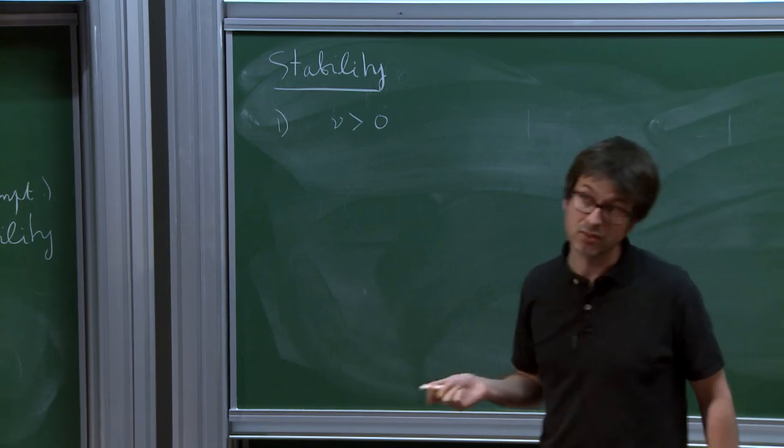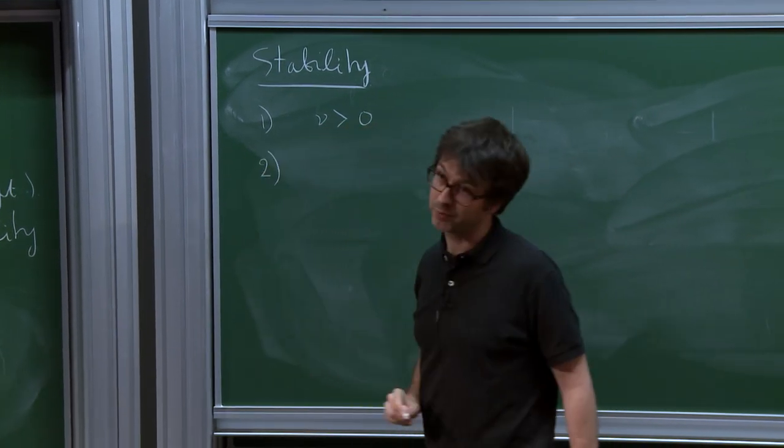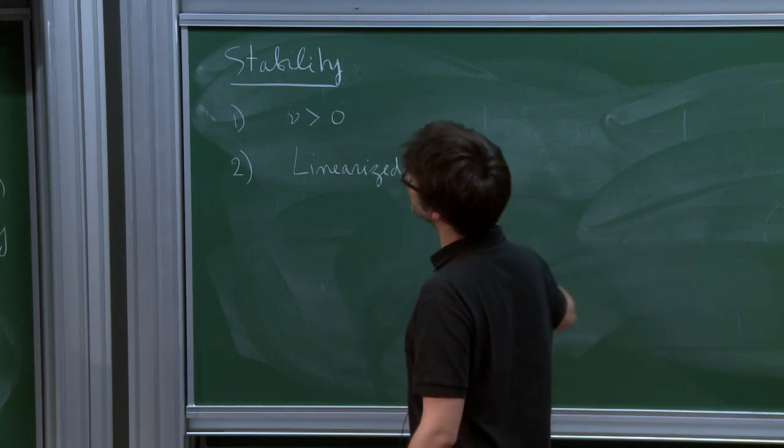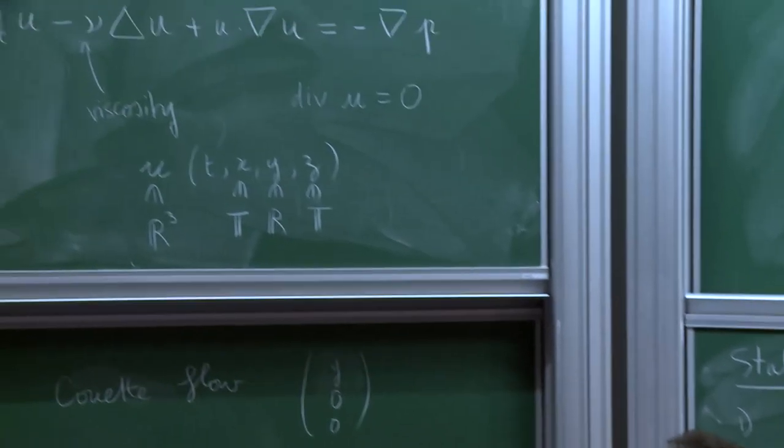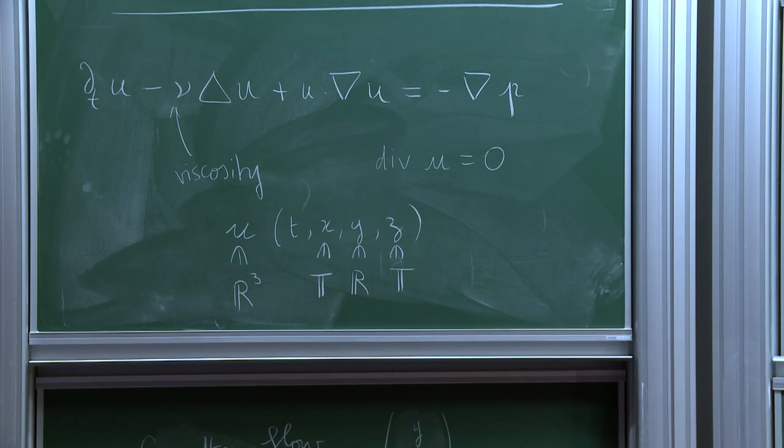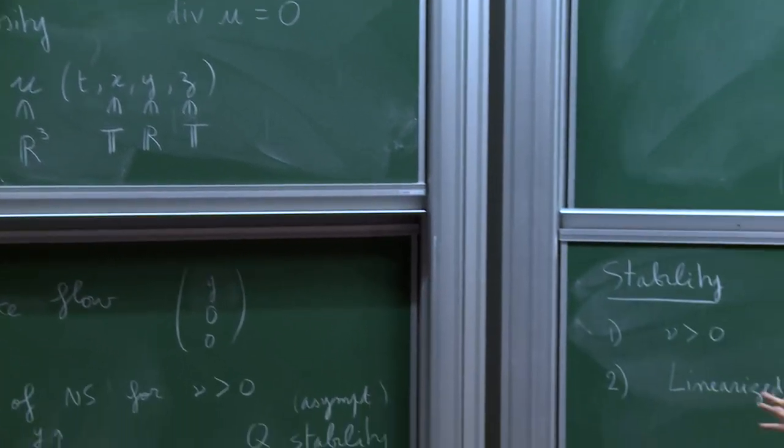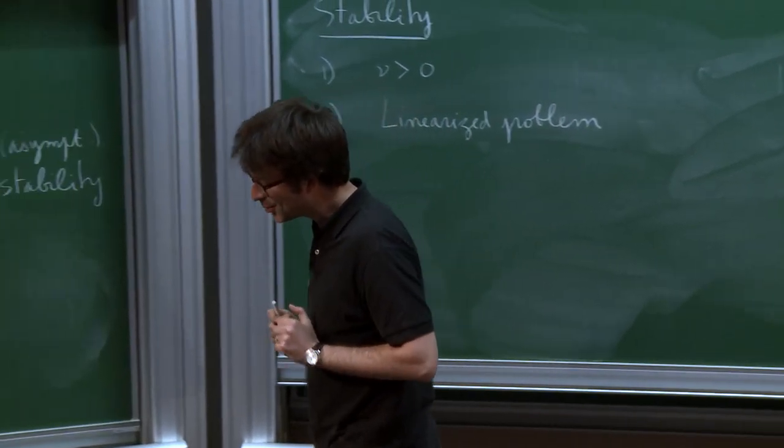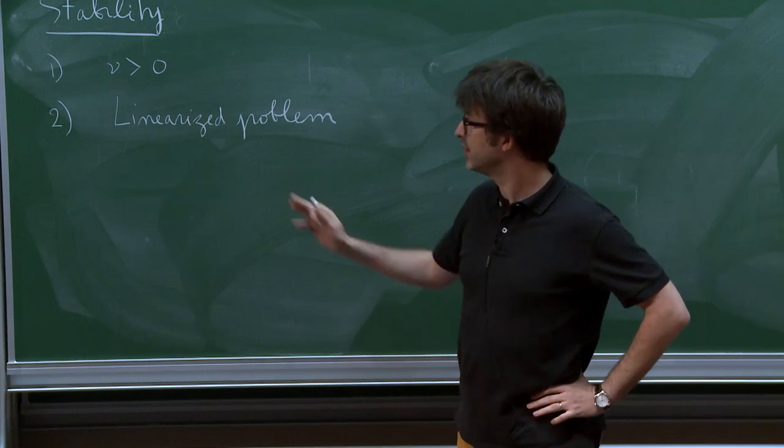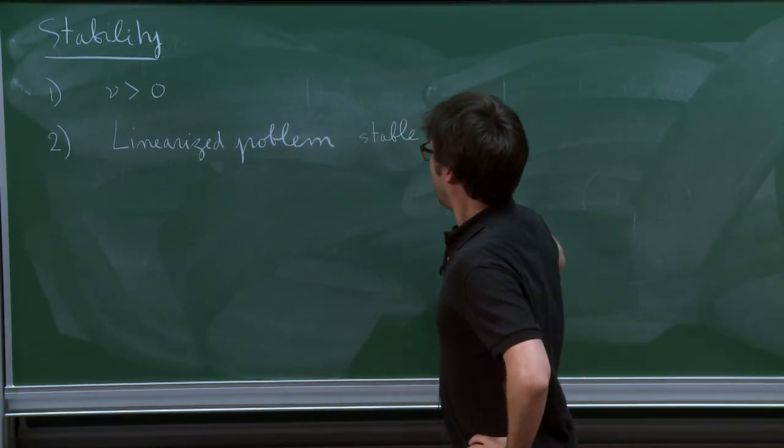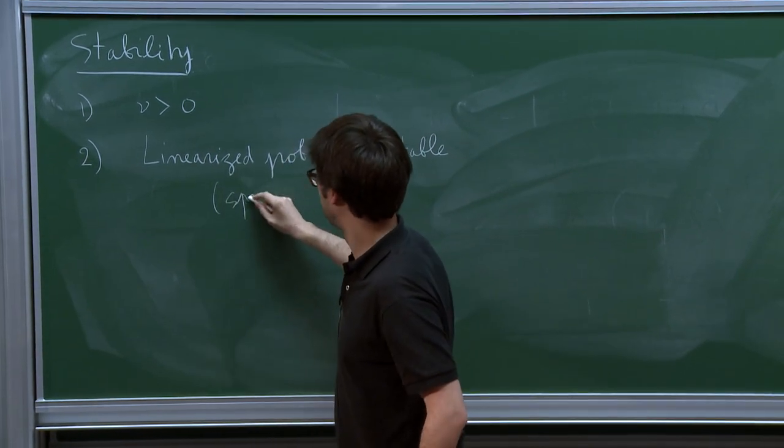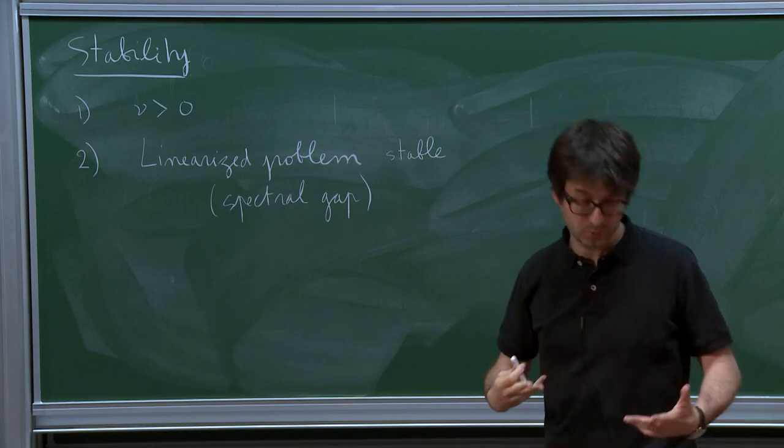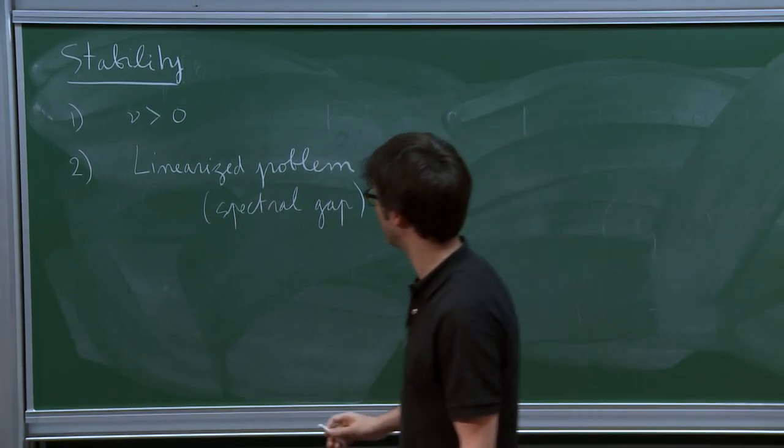So next thing you do is try and look at the linearized problem. So informally speaking, you just drop the convection term and what you keep essentially is the heat equation. So it's a bit more complicated because you need to linearize around the Couette flow. But essentially you get a linear heat equation with some more complicated terms, which are lower order. But what you see immediately is that the linearized problem is stable. And it's even very stable in that you get a spectral gap. So once you have such a strong spectral information, it's not hard to deduce non-linear stability.